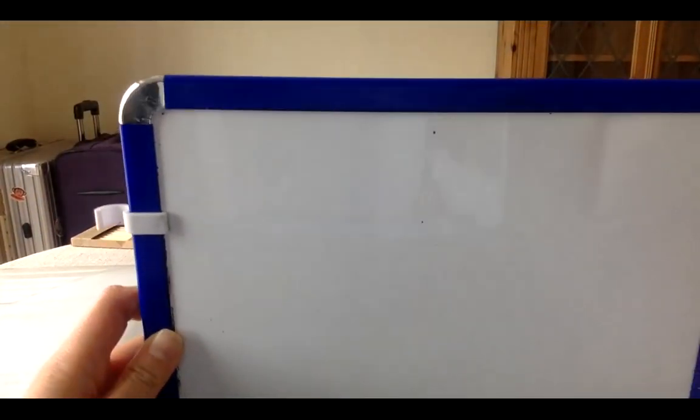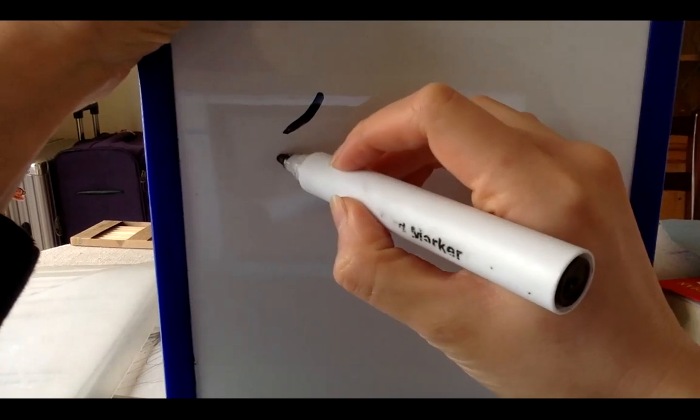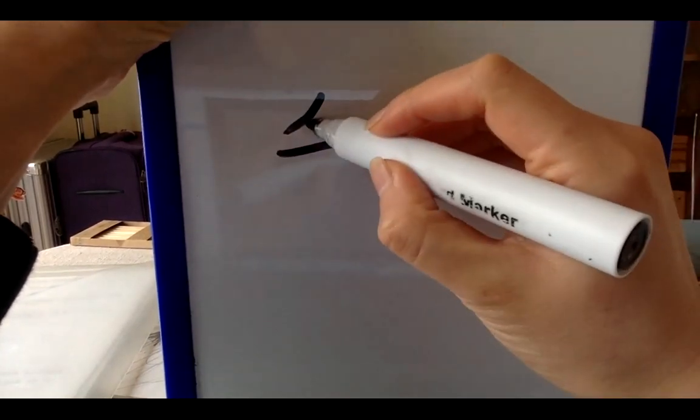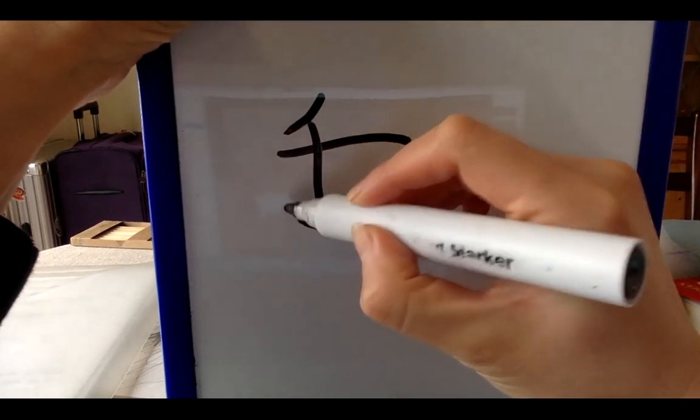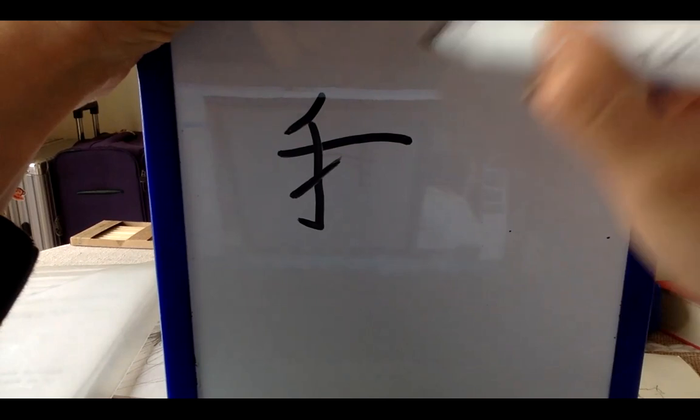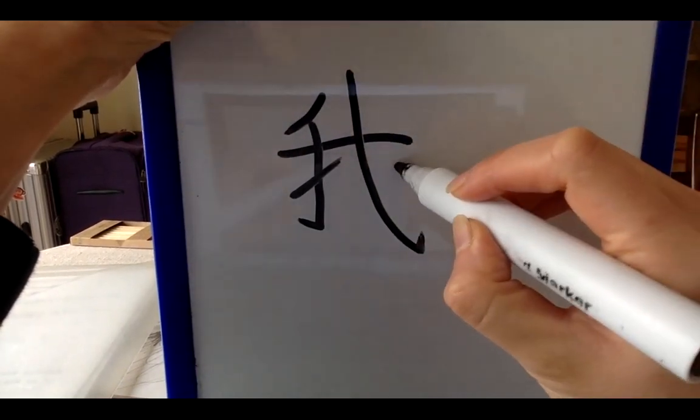All right, now please take out a pencil and a piece of paper and write with me. First stroke, second stroke, it's horizontal. Number three, four, five, six,